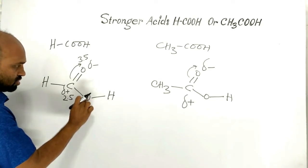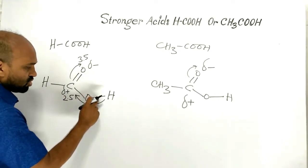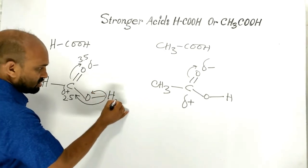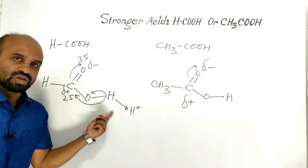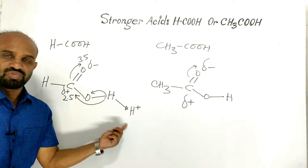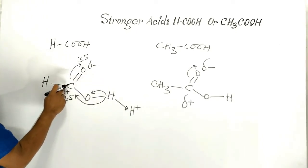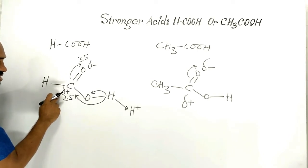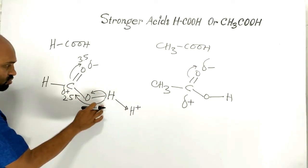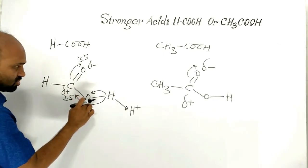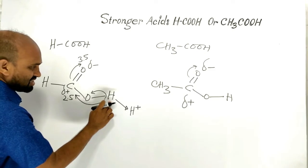Because of this positive charge on carbon, the electrons of the O–H bond move towards carbon. As a result, this bond undergoes heterolytic fission, and hydrogen gets freed as a proton very easily. In this way formic acid acts as an acid because it can produce a proton readily.